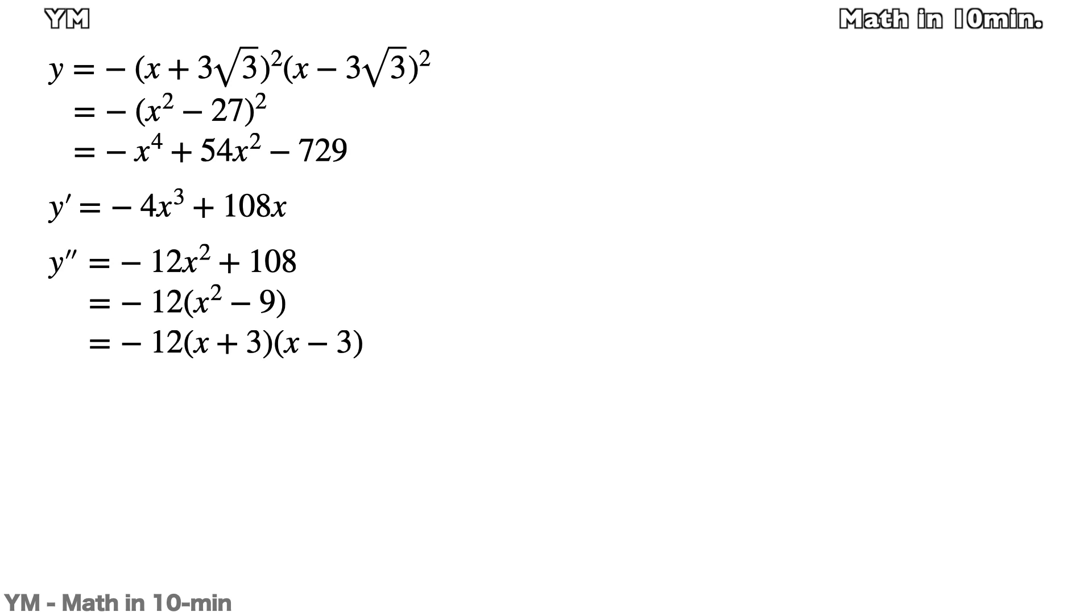This is factorized to -12(x + 3)(x - 3). So y has the inflection points at x equals -3 and 3. Since the slope which I am looking for is on the left side, I will plug -3 into y'.